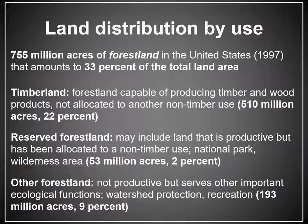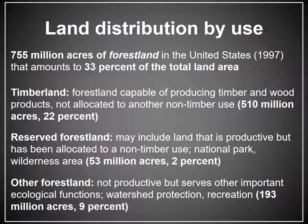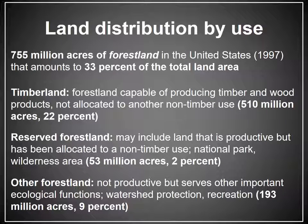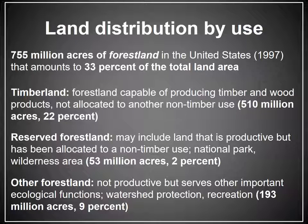Reserved forest land — land that may or may not be productive in terms of wood products but is allocated to use that would preclude timber harvesting — accounts for just 2 percent of the United States land base. These are our national parks, state parks, wilderness areas, and other reserved pieces of land. Other forest land includes land that is inherently unproductive enough that there is no way to grow wood products on any kind of regular or sustainable basis, accounting for just 9 percent of the total U.S. land base. These areas are generally concentrated in the western part of the country; they are forest by definition and provide all the ecological benefits of intact forest land, but are less productive due to soil or other climate conditions.